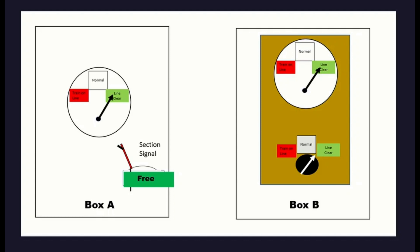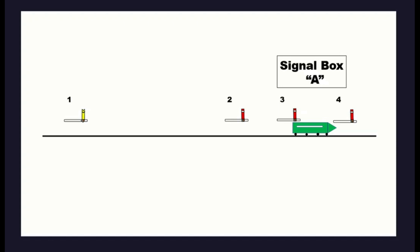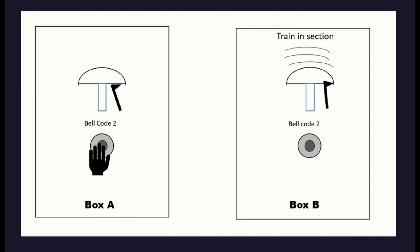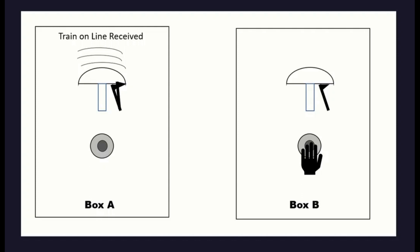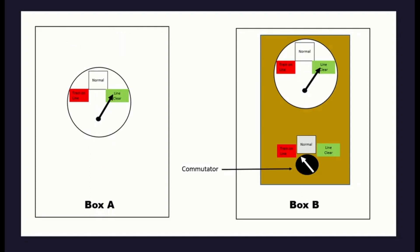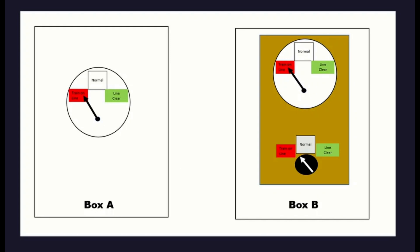Notice also that the section signal at box A is now free. The important factor here is that the signal can only be released once. Once the signal has been cleared and returned to danger, then another line clear will be needed to free the section signal again. That will not happen until the train has been through the section and the section approved to be clear. The signal at box A can allow the train entrance to the section. As the train enters the section, the signal at box A presses the bell plunger twice to tell box B that the train is in section. Box B replies by pressing the bell plunger twice — message received — and turns the commutator to train on line. The indicators at box A and B turn to train on line and act as reminders to the signallers that the section is occupied.